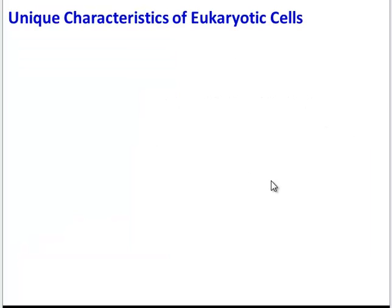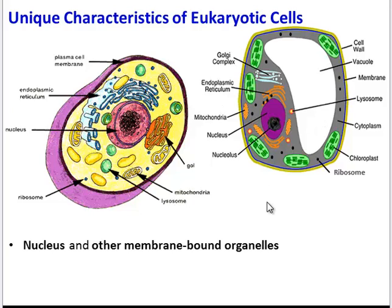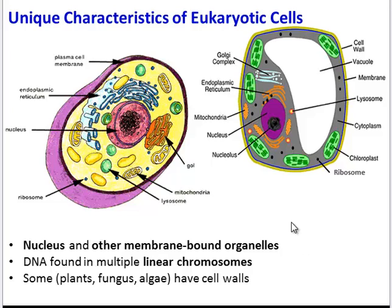Now, eukaryotic cells — unique characteristics. Here are two different eukaryotic cells: this is an animal cell, and this is a plant cell. Some things they have in common are a nucleus, which contains the DNA, along with many other membrane-bound organelles, like the mitochondria, the lysosome, the endoplasmic reticulum, and the chloroplast. Additionally, eukaryotic cells have their DNA arranged in multiple linear chromosomes. And finally, some eukaryotic cells, like plants, fungus, and algae, have cell walls. All bacteria have cell walls, but the cell walls are made of different materials.